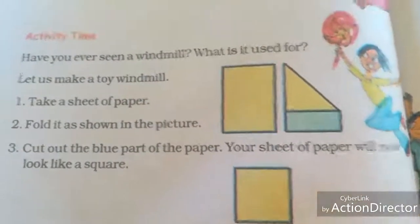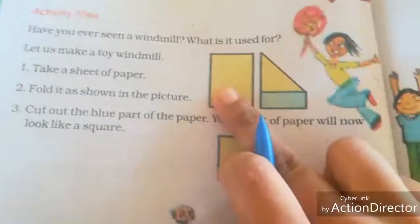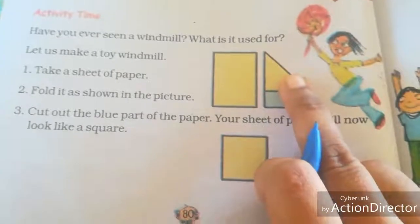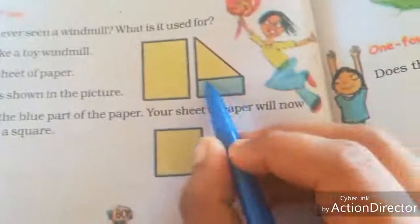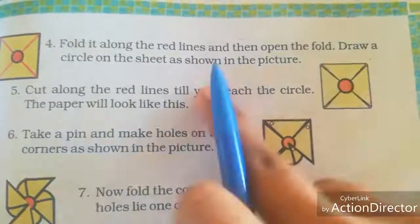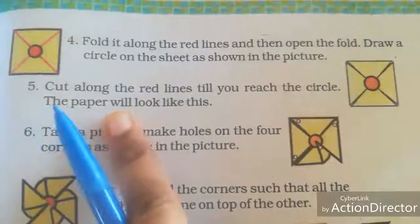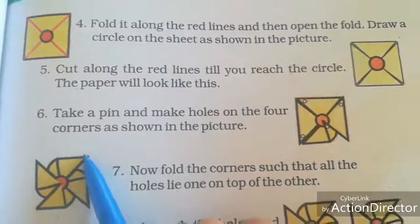Let us make a toy windmill. First, take a sheet of paper like this. Next, fold it as shown in the figure. Cut out the blue part. Now you cut out the blue part of the paper — your sheet of paper will look like a square. Next, fold it along the red lines and open the fold. Draw a circle on the sheet as shown in the picture. Cut along the red lines until you reach the circle.